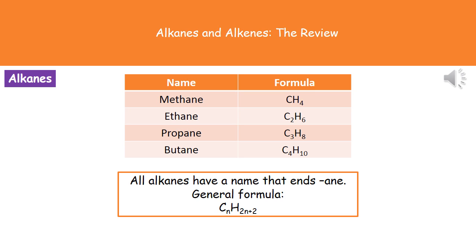The first type of hydrocarbon we're going to look at are the alkanes. In that first table we have four alkanes. We know they're alkanes because if you look at the names, they all end in A-N-E. The first part of the name tells us how many carbon atoms there are: METH is 1, ETH is 2, PROP is 3, and BUT is 4.